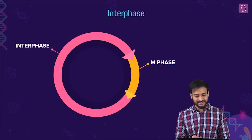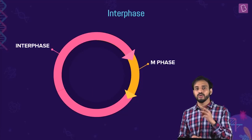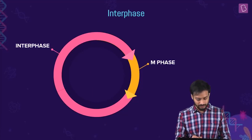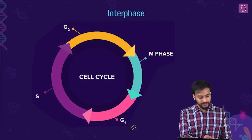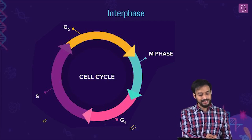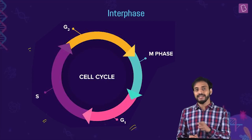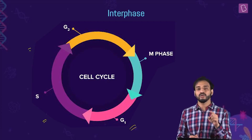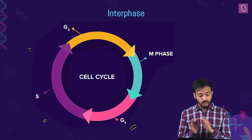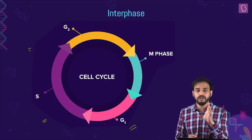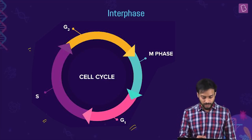Interphase is divided into three sub-phases: G1, S, and G2. This is the sequence a cell follows when dividing — G1, followed by S phase, followed by G2 phase. All three — G1, S, and G2 — are part of interphase, not the M phase.